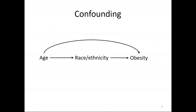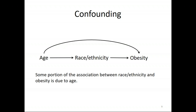Say we're looking at the association between race/ethnicity and obesity, and we want to know if race/ethnicity is associated with or causes obesity. In the US, age is related to obesity, and the age distributions of different ethnic groups are different. So if you look at it crudely, some of the association between race/ethnicity and obesity is actually due to age, not to the construct of race/ethnicity you're trying to examine.